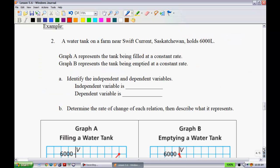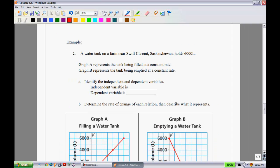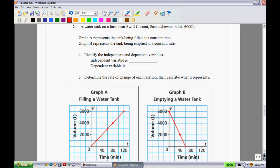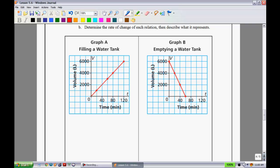Let's go to the back page. Example two: A water tank on a farm near Swift Current, Saskatchewan holds 6,000 litres. Graph A represents a tank being filled at a constant rate. Graph B represents a tank being emptied at a constant rate. Identify the independent and dependent variables, and then determine the rate of change of each relation. So two things they want you to do here. I'm just going to shrink this up so we can see it a little bit better. The independent and dependent: remember that your independent variable is always what is on the x-axis, so that would be your time, represented by t. And we have on the y-axis volume, represented in terms of v on the graph.